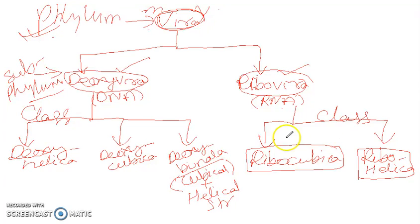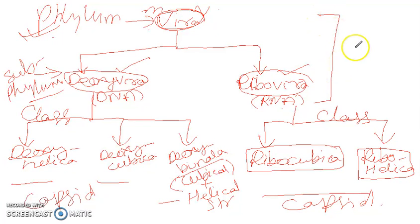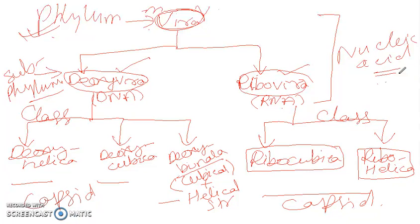The classes depend on the size or shape of the capsid. The phylum and sub-phylum are classified on the basis of the genetic material. This is all about the modern system of classification, called the LHT classification — Longs forms, Loft forms, and Terminals classification.